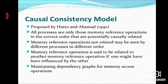The next consistency model is the causal consistency model, proposed by Hutto and Ahamad in the 1990s. In this model, all processes see only those memory reference operations in the correct order that are potentially causally related. Memory reference operations that are not causally related may be seen by different processes in different orders. A dependency graph is maintained for memory access operations. A memory reference operation is said to be related to another if one might have been influenced by the other.